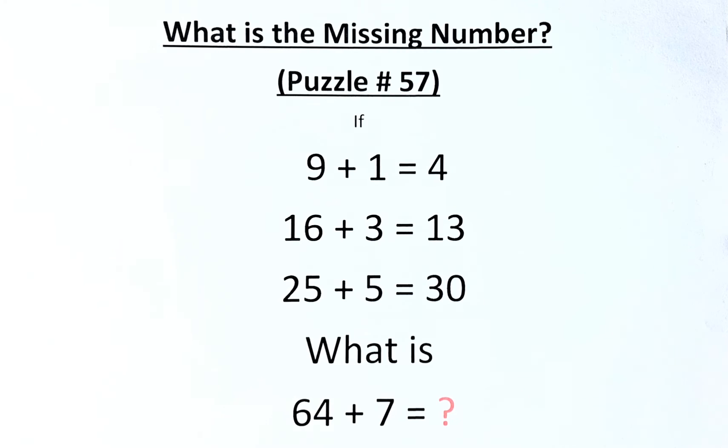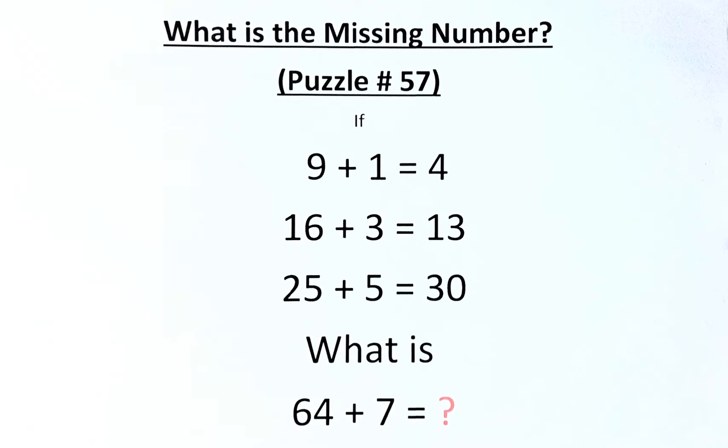Welcome back to the solution of puzzle number 57. What is the missing number in this puzzle? The numbers in the puzzles are 9 plus 1 equals 4, 16 plus 3 equals 13, 25 plus 5 equals 30, what then is 64 plus 7 equals?